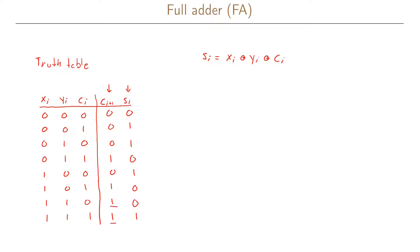Looking at the last two rows of the truth table: ci+1 is 1 when both xi and yi are 1, and xi·yi is 1 in no other rows. So we can write ci+1 = xi·yi. For the other two 1s in the truth table...